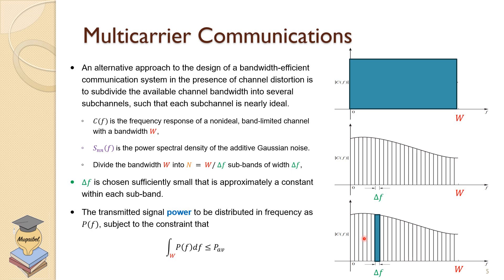The phase has to be linear. So when we do this division, for fair comparison, we have to make sure that the power that we transmit in a single carrier is equivalent to the power that is transmitted over all the sub-channels. The transmitted signal power to be distributed in frequency as PF should be subject to the constraint that the overall power over all the bandwidth of the power spectral density should be less than or equal to the power average. For fairness, of course, it has to be equal. But if it is less and perform better, then we are still doing fine.